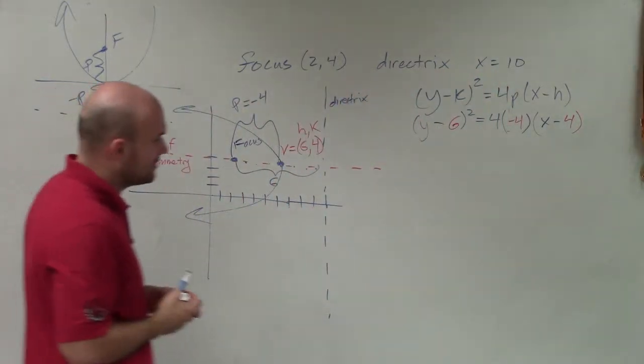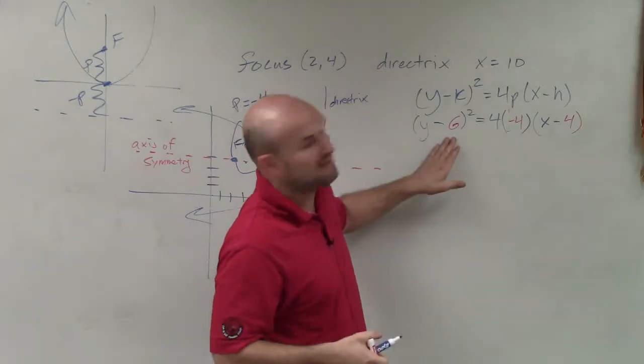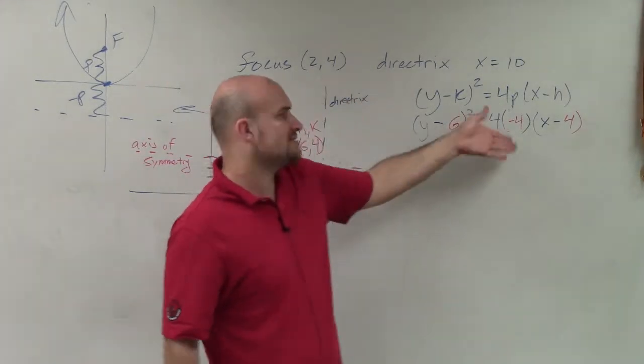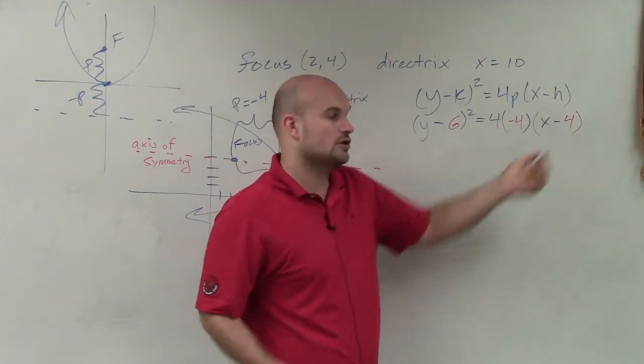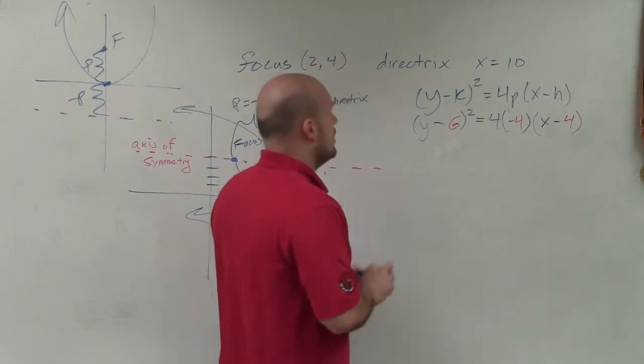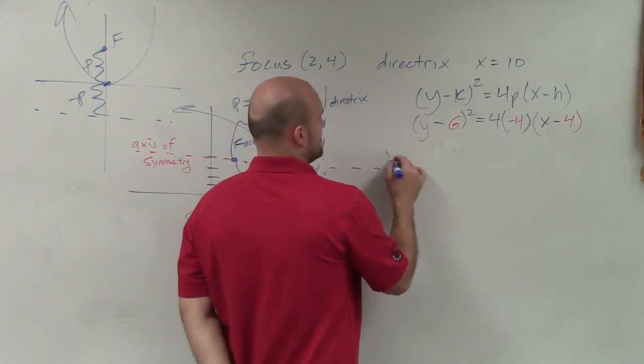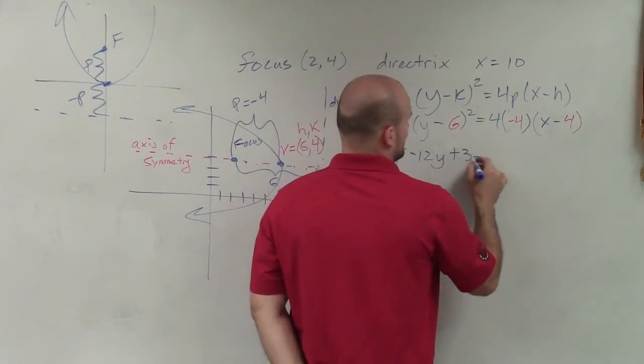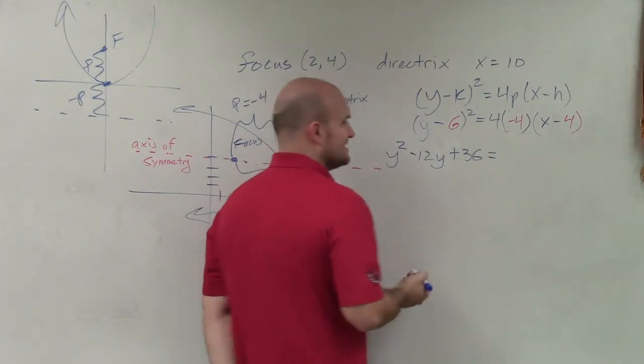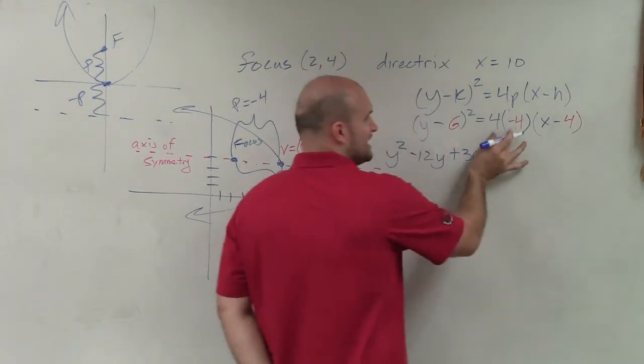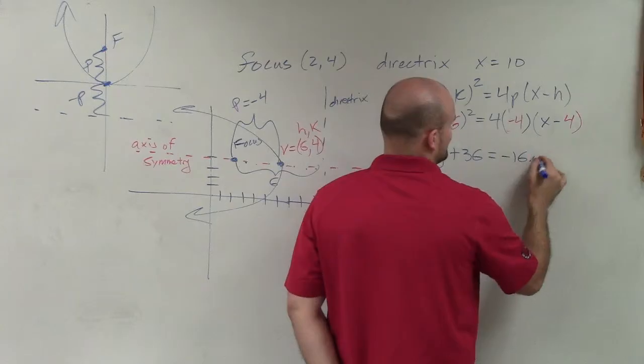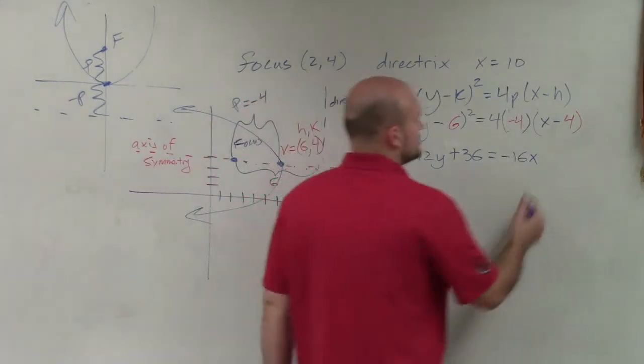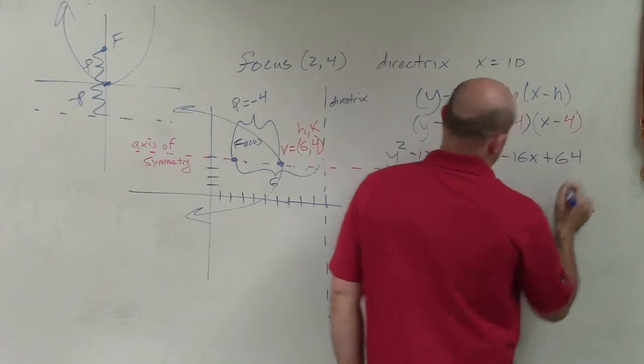So now what I need to do to write the standard form of the equation is I need to expand my binomial squared, which will produce a perfect square trinomial, as well as apply the distributive property across over here. So (y - 6)² is going to be y² - 12y + 36 = 4 × -4 is -16. So -16 times x is -16x. And -16 times -4 is going to be a positive 64.